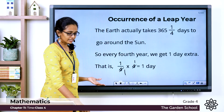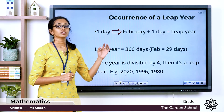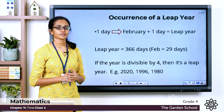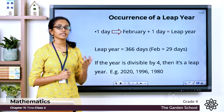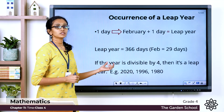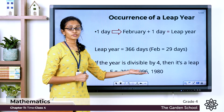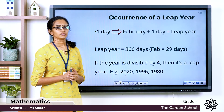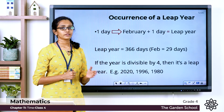That 1 extra day is added to the month of February once in every 4 years, so February will have a total of 29 days. We call such a year a leap year and we call the 29th of February the leap day. A leap year will have a total of 366 days. To find out if a given year is a leap year, just check if it is divisible by 4. For example, 2020, 1996 and 1980 are all divisible by 4 and are leap years.